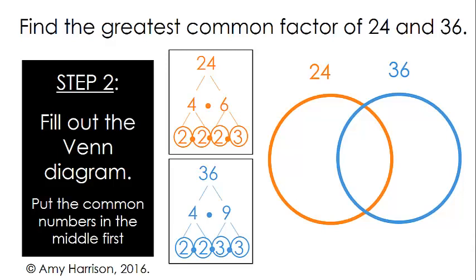We know that that middle section is for prime numbers that 24 and 36 share. So we're going to start by figuring out what common prime numbers we have here in our prime factorization.